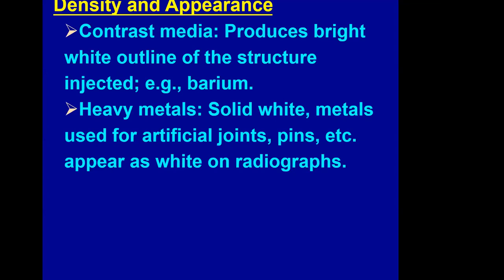We may also see contrast media on the radiograph. Contrast media are used to visualize certain structures and produce a bright white outline of the structure into which they have been injected. The most common contrast medium is barium. Heavy metals appear solid white on a radiograph and we see them in artificial joints, pins, etc.